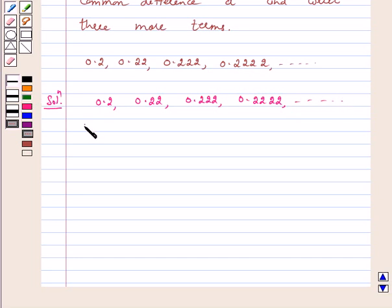We have a2 minus a1 is equal to 0.22 minus 0.2 which is equal to 0.02.